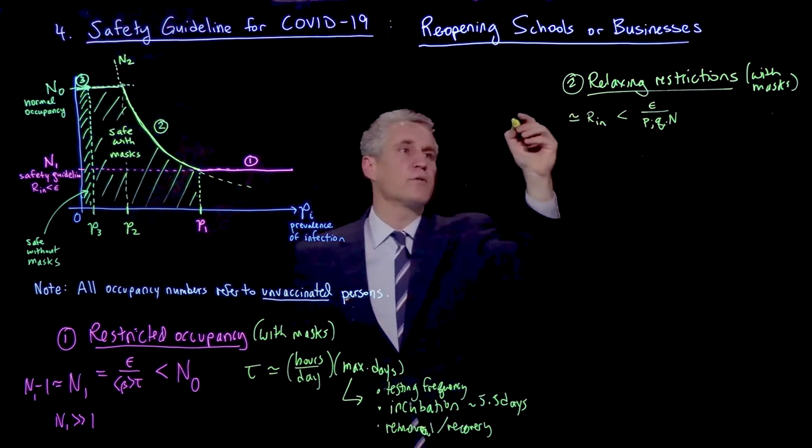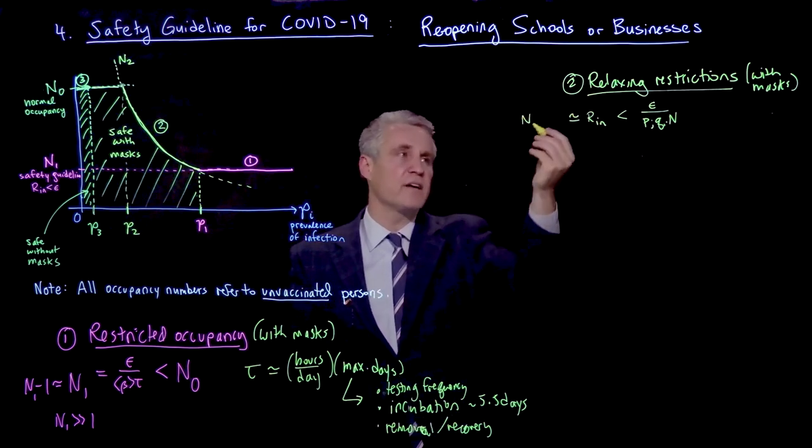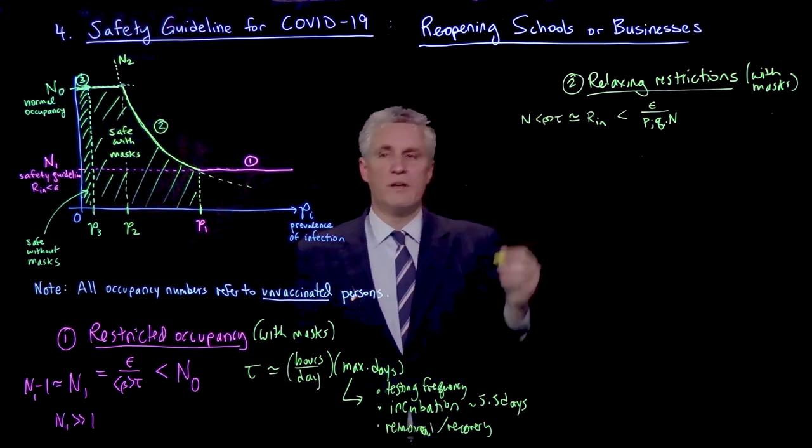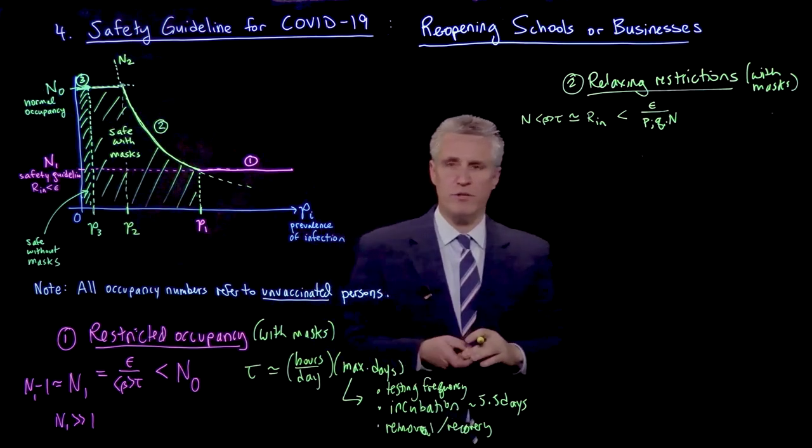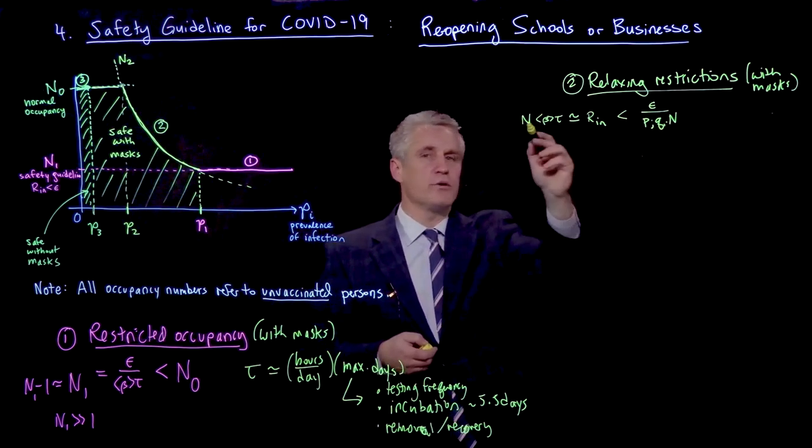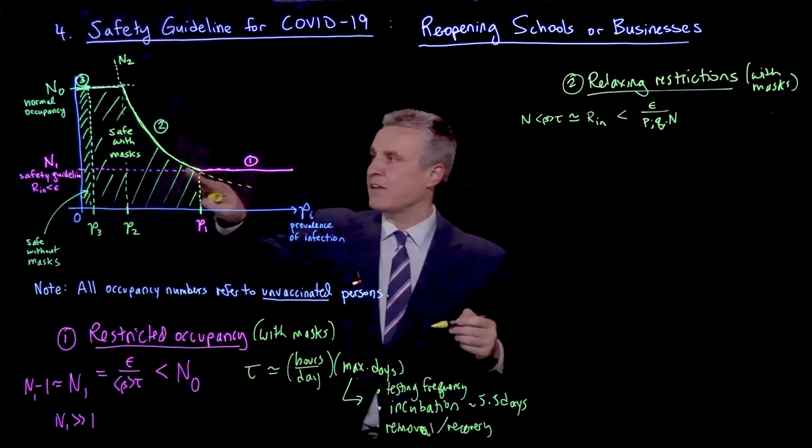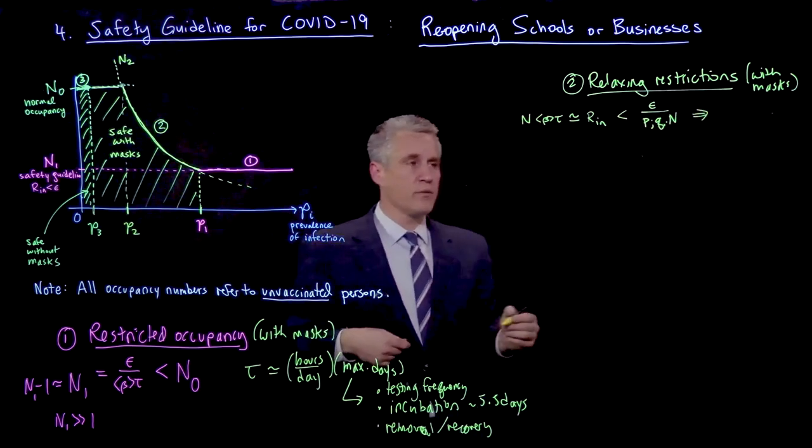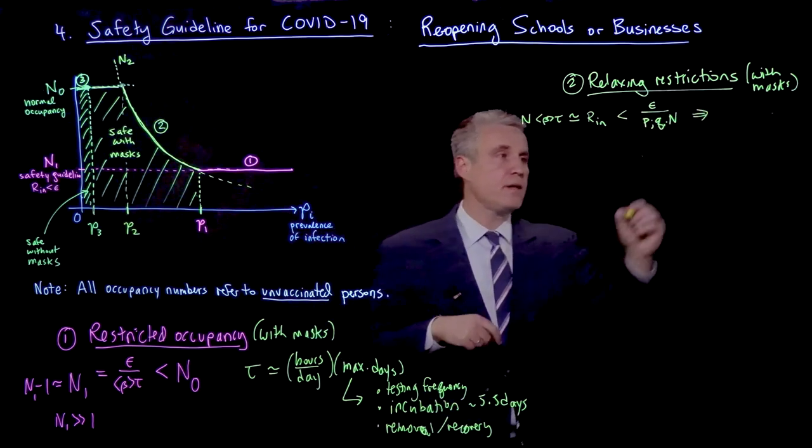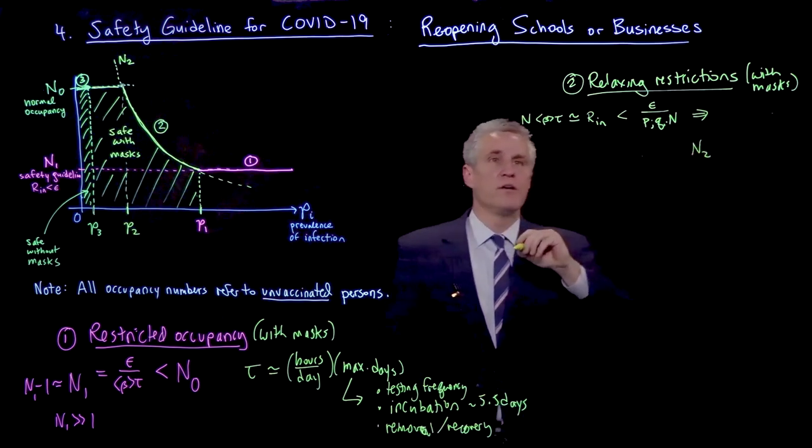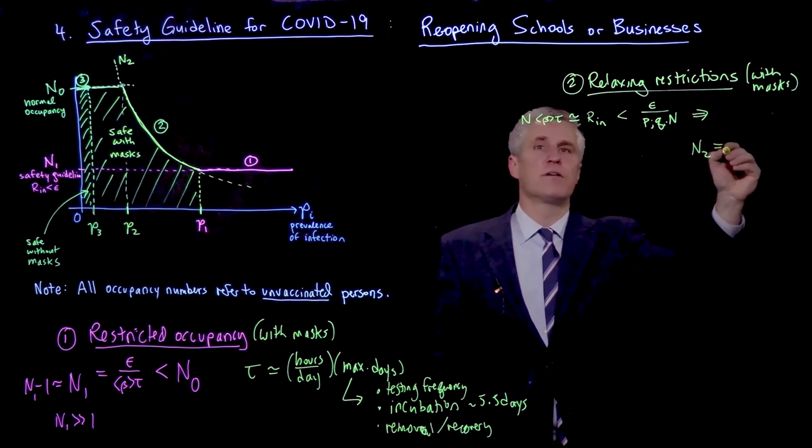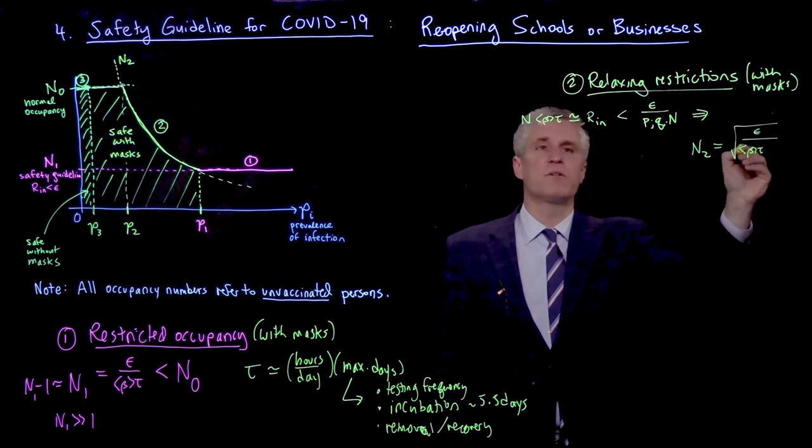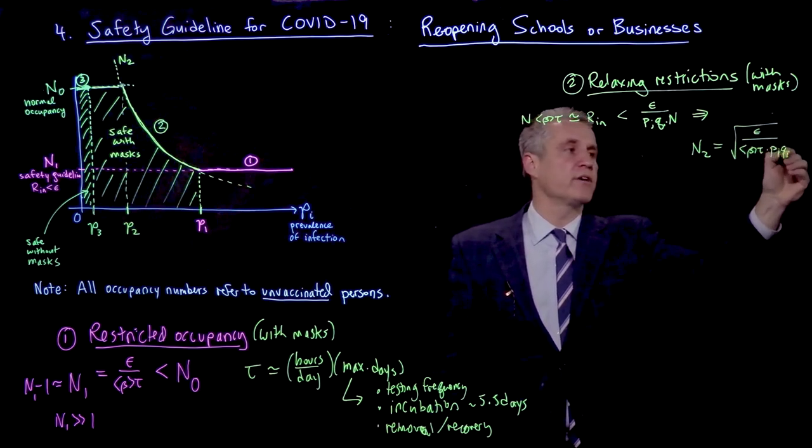So for relaxing restrictions, we're then going to be interested in the indoor reproductive number being less than now a rescaled value, which would be epsilon over pi qi n. And the indoor reproductive number, remember, is n minus 1, n, but it's approximately n times beta tau. So I've replaced, again, n minus 1 with n just to kind of get a simpler formula. And so notice now here, n is in both sides of the equations. If I want to solve for the value n2, which is this yellow curve here, I'm actually going to have to put the n's on one side and take a square root.